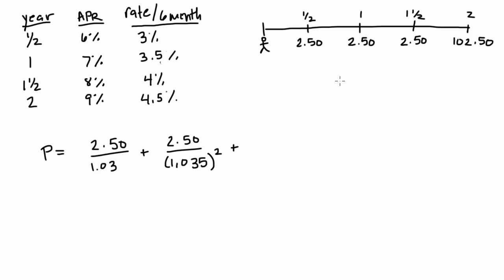For the third cash flow, which we receive in a year and a half, that cash flow amount is $2.50, and we're going to discount that at 4% per six months. And there are three six-month periods between this cash flow and today.